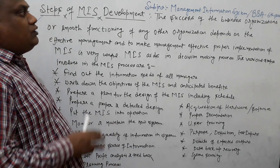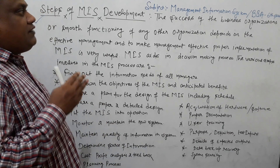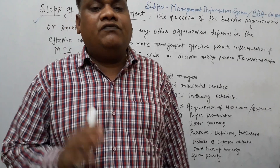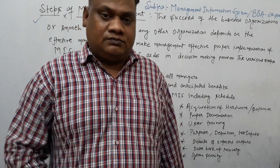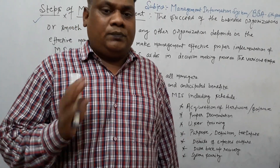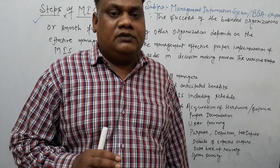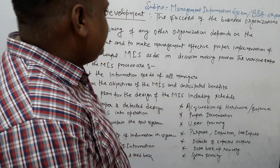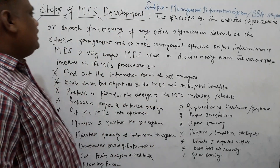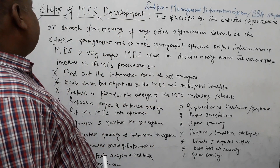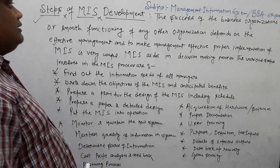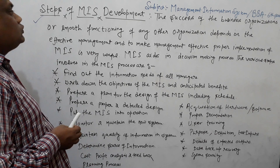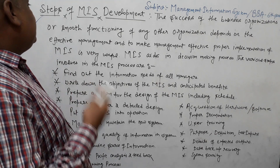Previously we covered the effectiveness and efficiency criteria of an information system — that was the topic we completed earlier online. Now in sequence, today's most important topic is the steps of MIS development, which we will discuss.